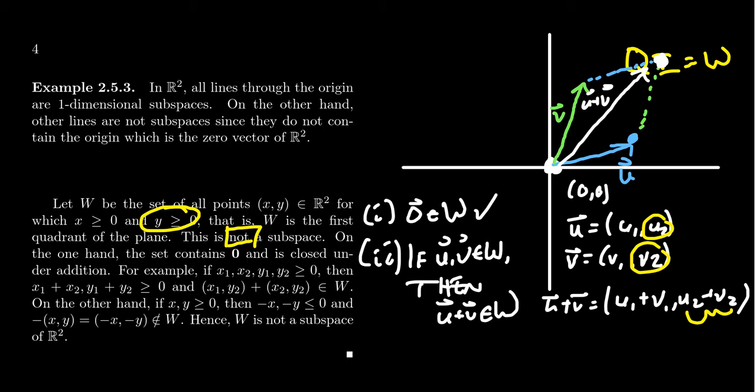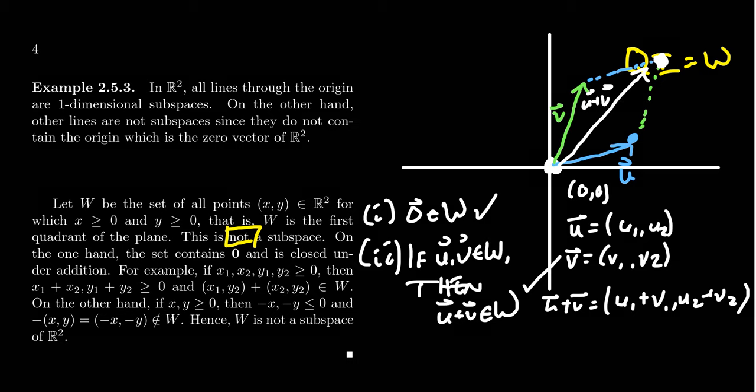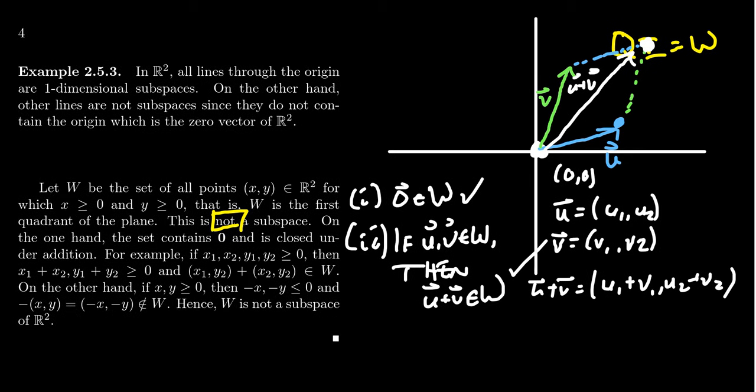And so, it does turn out that when you focus on axiom two here for a subspace, it passes that condition. The sum of two vectors inside the first quadrant will be a vector in the first quadrant. So, so far we've showed that it has condition one, it has condition two, but I still claim it's not a subspace. So, what has to fail, the thing that has to fail is going to have to be the third condition.